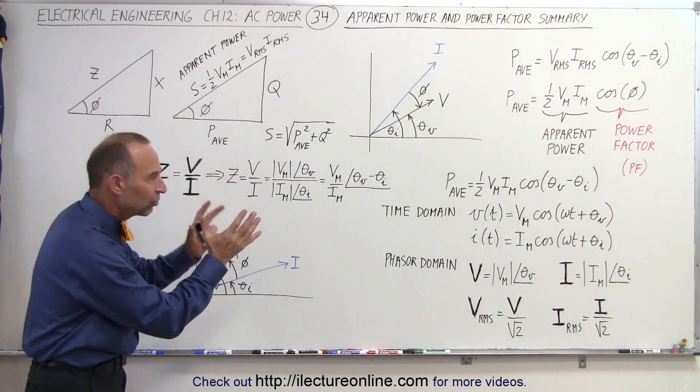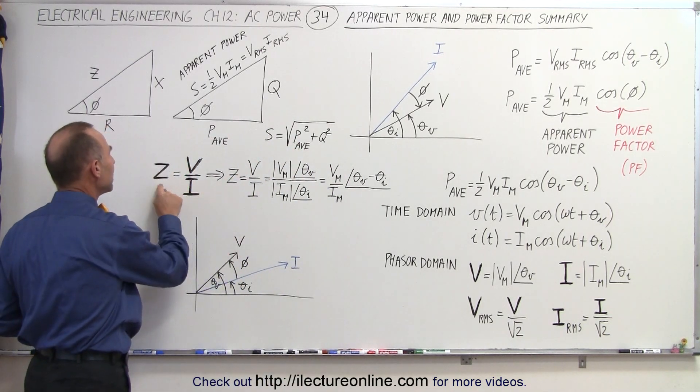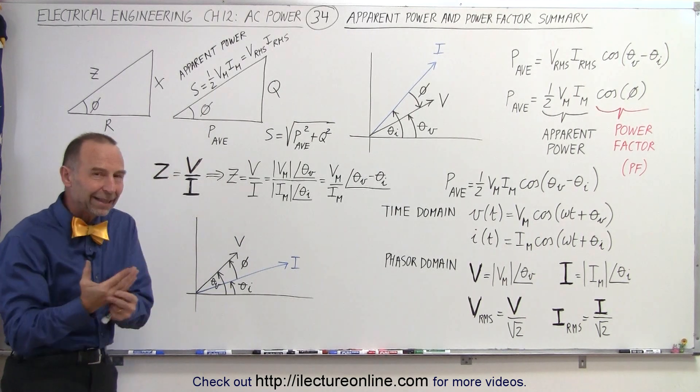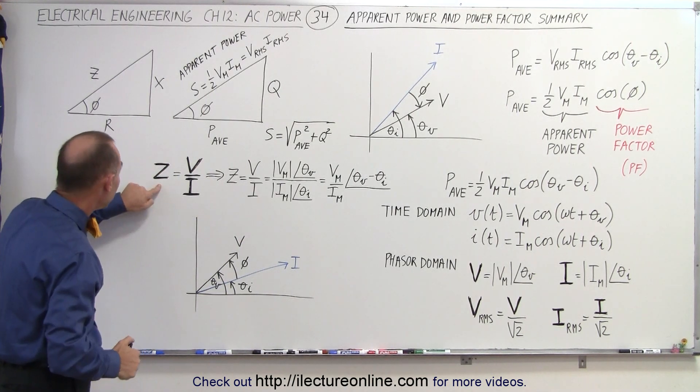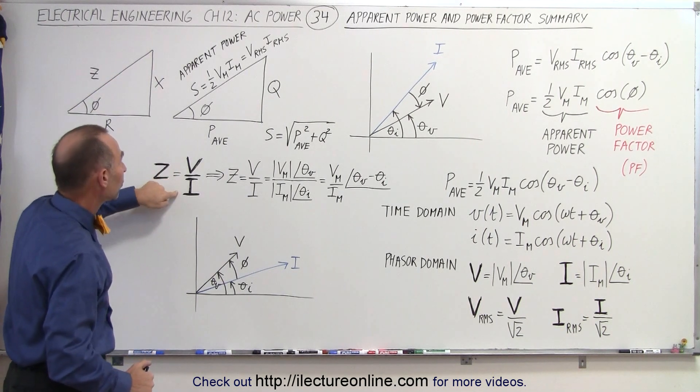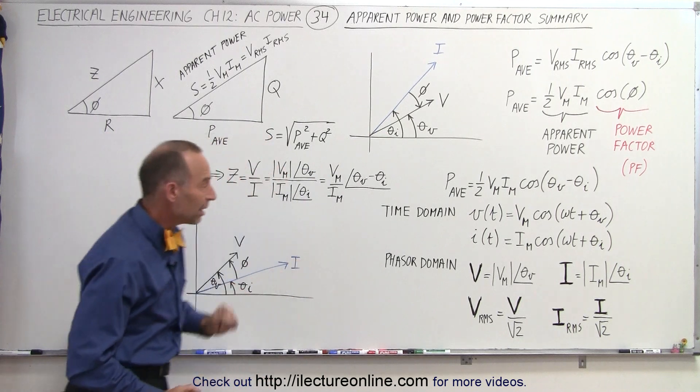There's one thing that connects all that together, which is the concept of the impedance in the circuit. And again, we can use bold-faced letters to indicate that these are phasors. Impedance is, after all, a phasor on this diagram, so is voltage, and so is current on this diagram right here.